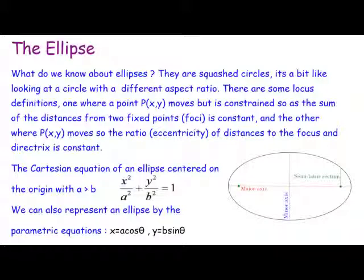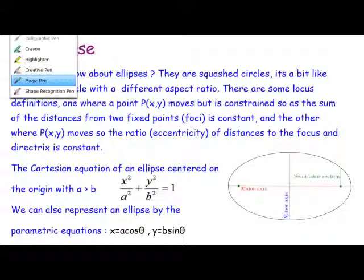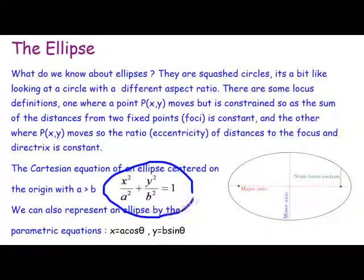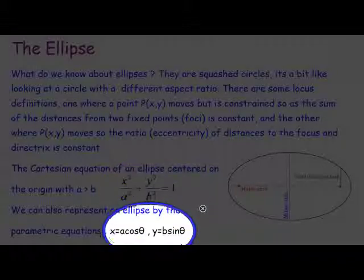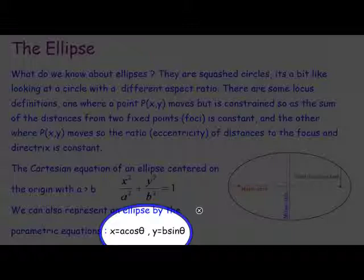There are a couple of ways to represent the ellipse: Cartesian and parametric. The parametric representation of the ellipse is x equals a cos theta and y equals b sine theta.